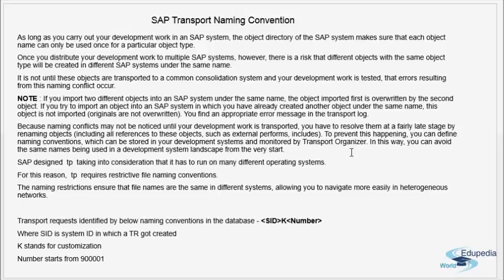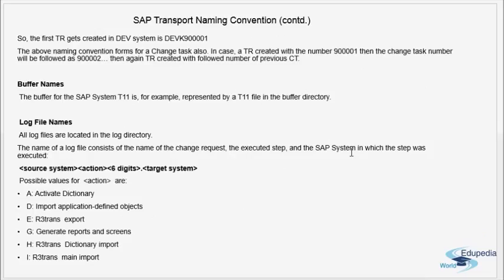The transport request is identified by the naming convention: SID + K + number, where SID is the system ID in which the transport was created, K stands for customization, and the number starts with nine followed by five digits beginning at 00001. So the first transport created in a development system named DEV would be DEVK900001.